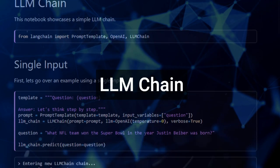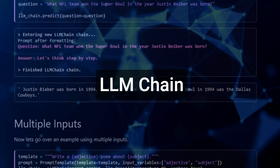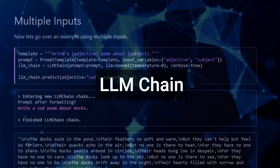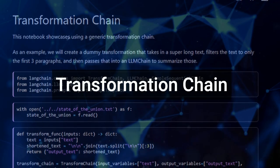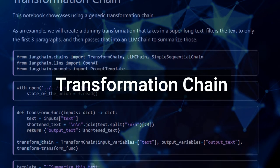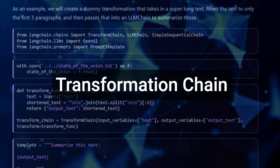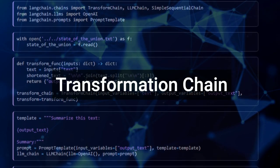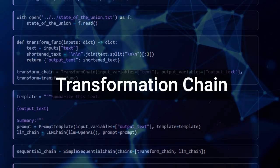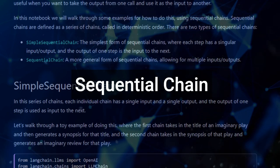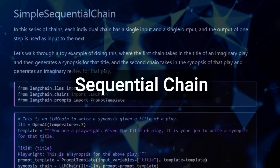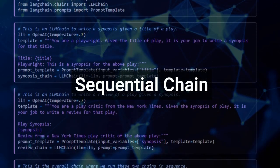Looking at generic chains, by far the most common is the large language model chain — it takes some input, formats it with a prompt template, runs it through a large language model, and returns. The second kind is transformation chains, which let you run some code or a function on the inputs or outputs of another chain — for example, running a regex on a response. The third generic chain is sequential chains, which lets you join multiple chains together, since chains can be made up of other chains.